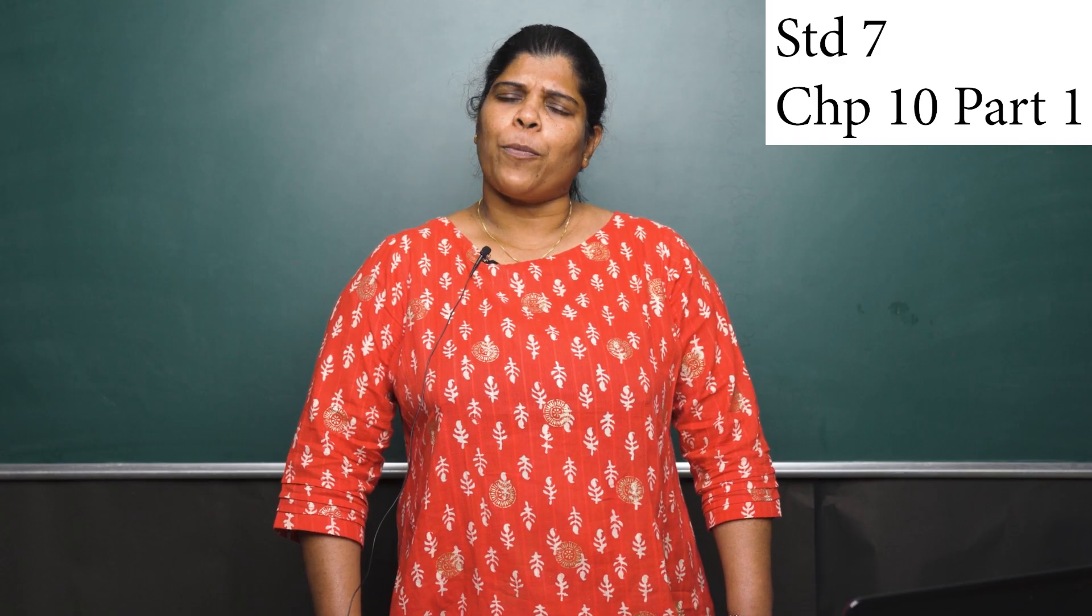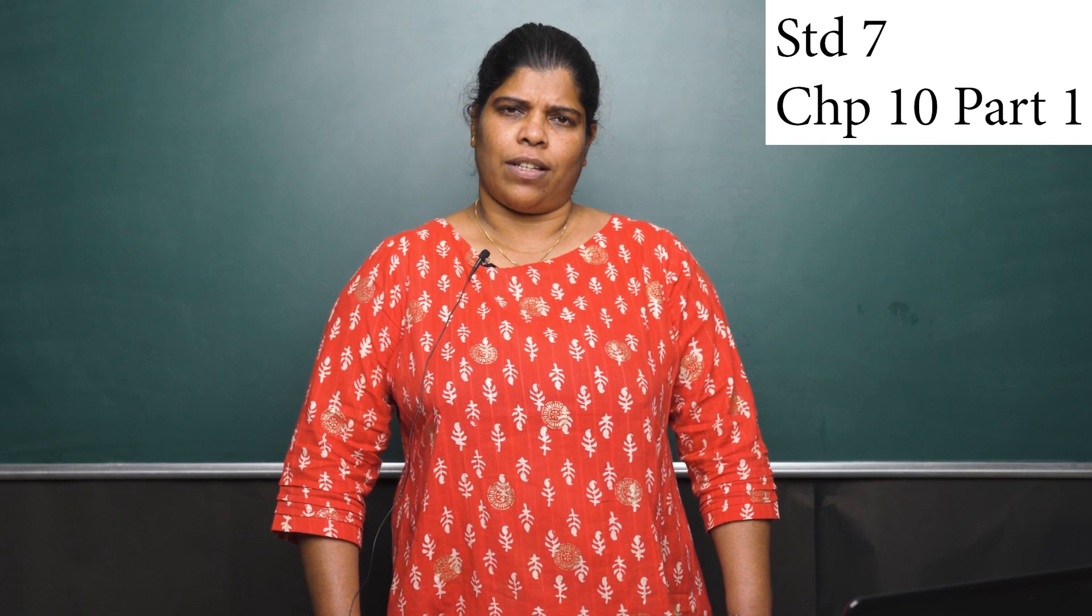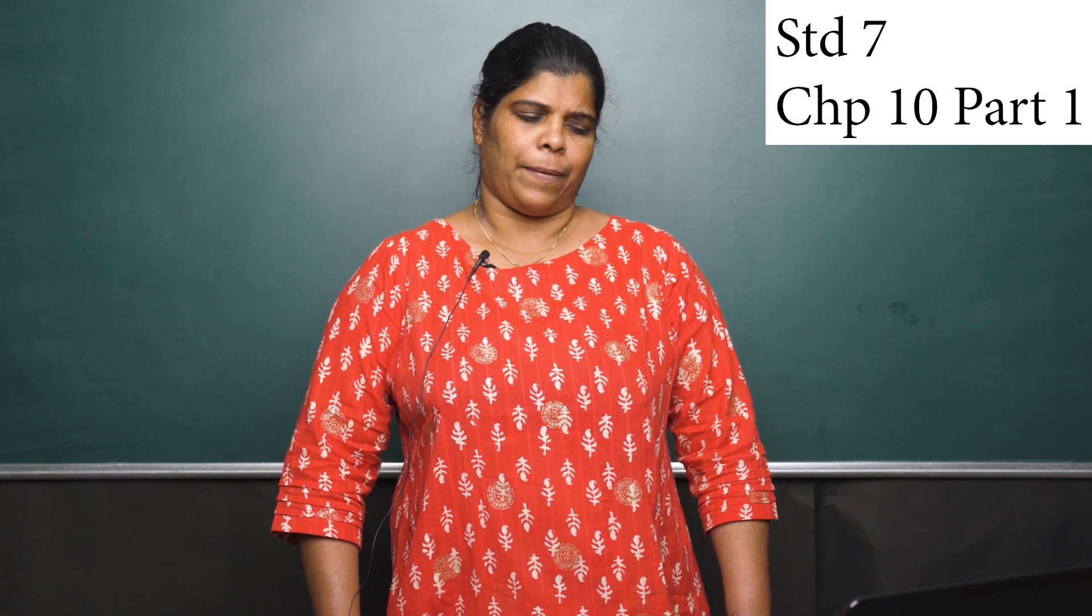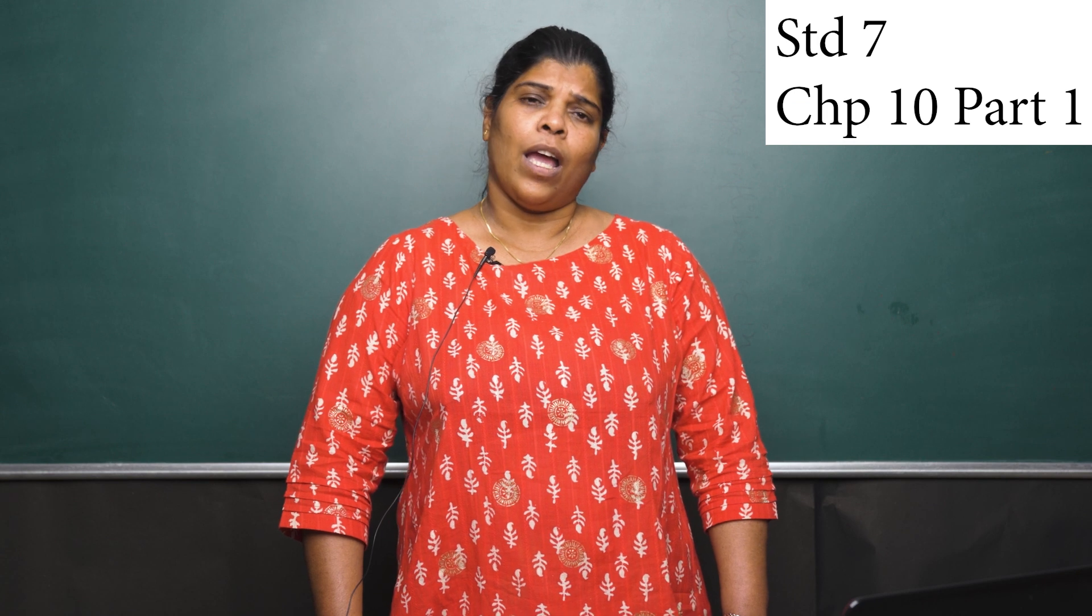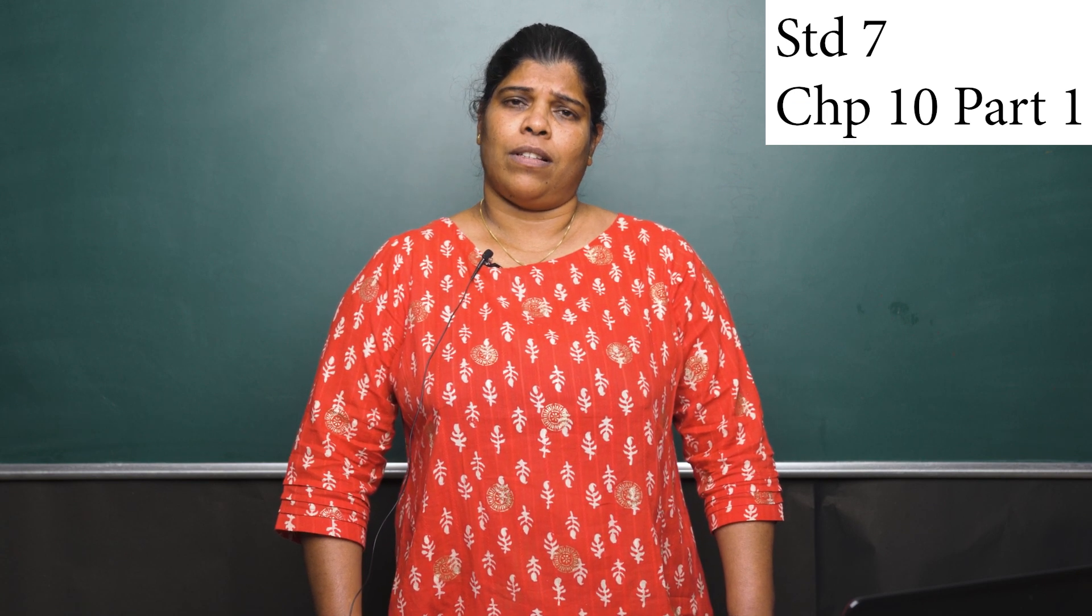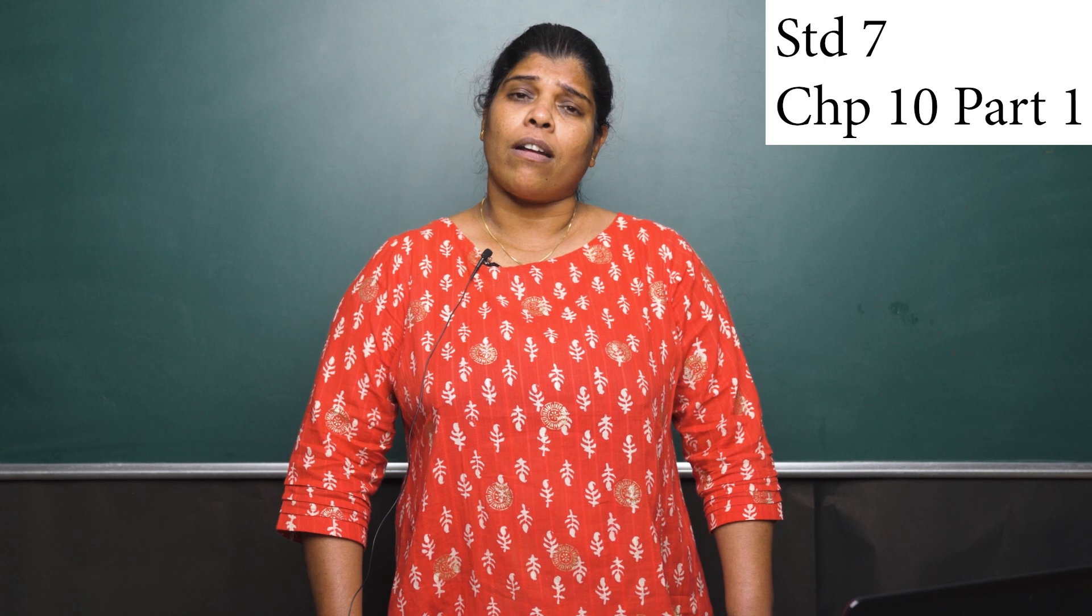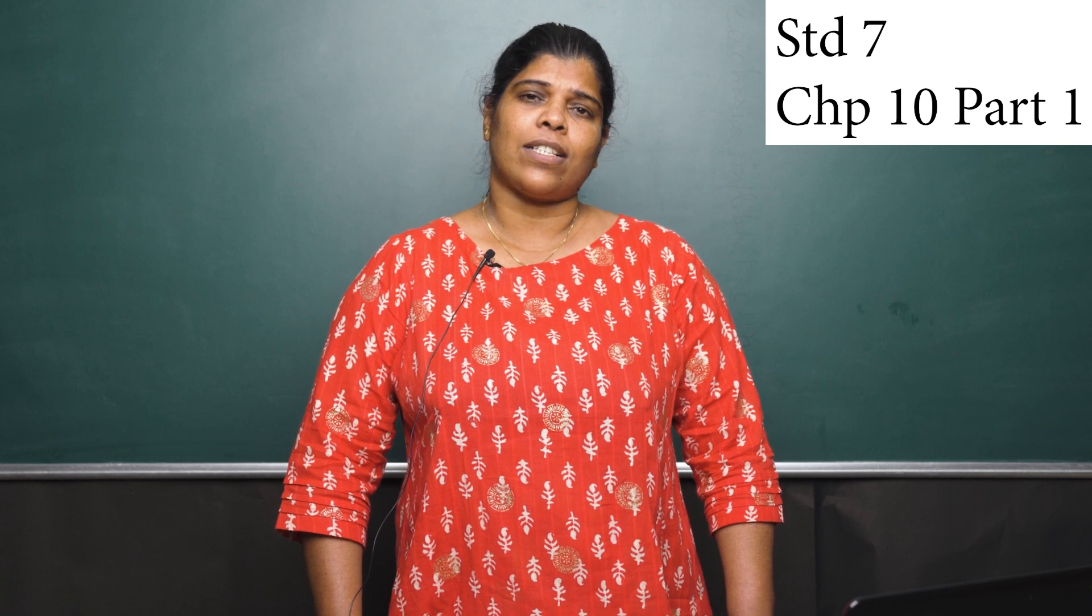Now, we shall proceed with the construction. Let us take one example. Construct a triangle ABC, given that AB is equal to 5 cm, BC is equal to 6 cm, and AC is equal to 7 cm. Before proceeding with the construction, first you have to draw a rough sketch, and you can see it on the screen.